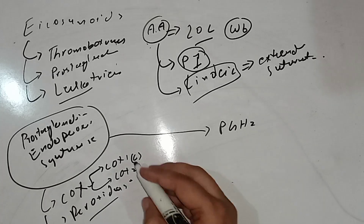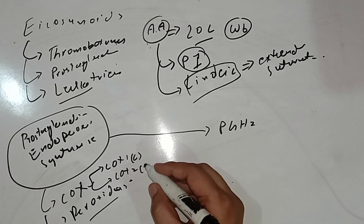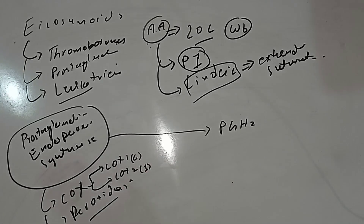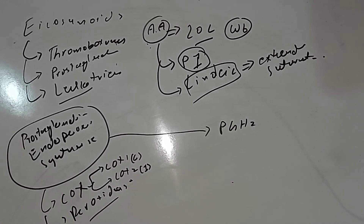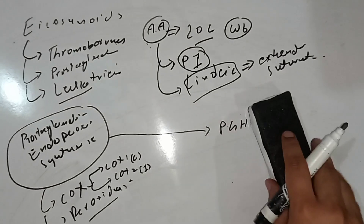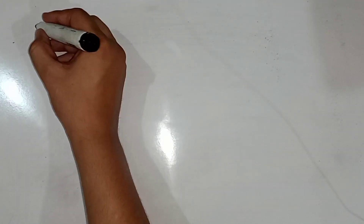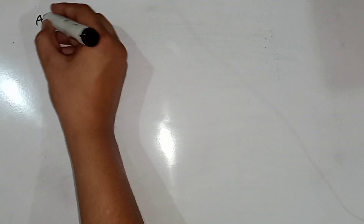Depending upon cellular type, COX also exists as two types: COX-1 and COX-2. COX-1 is constitutively present in different tissues, while COX-2 is the inducible form and is principally involved in the inflammatory response.